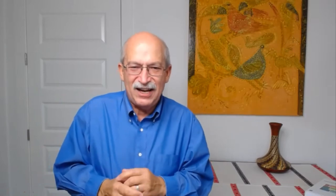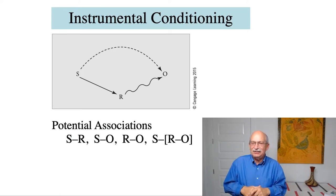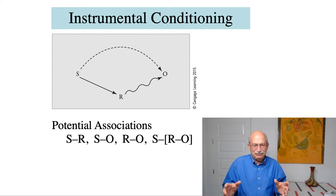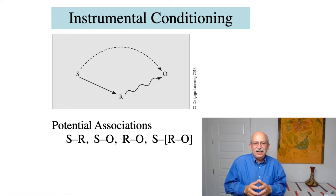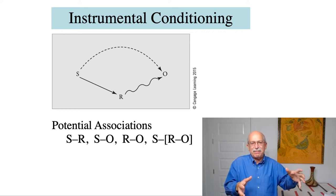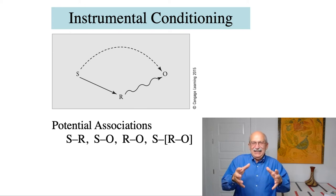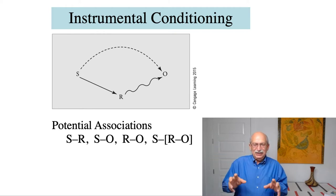Incentive motivation is the activation of the memory of the reinforcer, and thinking about the reinforcer sometimes energizes you to make the instrumental responses necessary to actually obtain it. To get into this, let's look at the first slide, which presents the three components of an instrumental conditioning situation that Thorndike originally identified — components that occur universally in every instrumental conditioning situation. You've got the instrumental response in the middle, but that response occurs in the presence of certain cues, represented here by the capital S. Once the response is made, that results in the delivery of the reinforcer, or the response outcome, capital O.